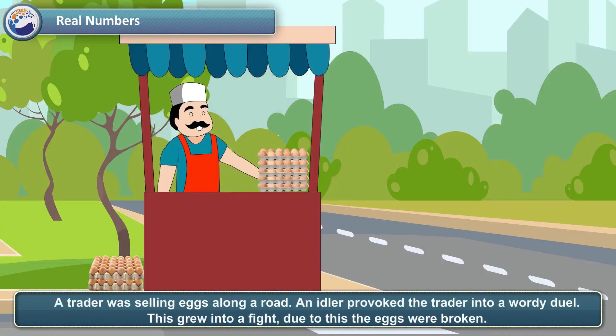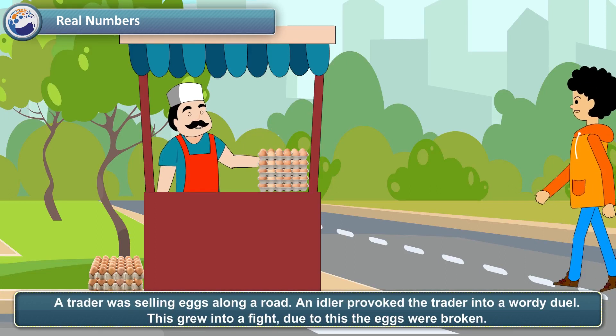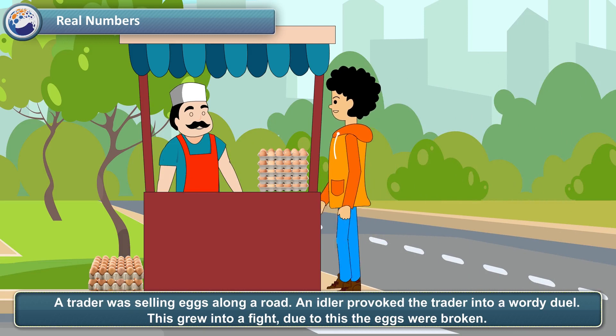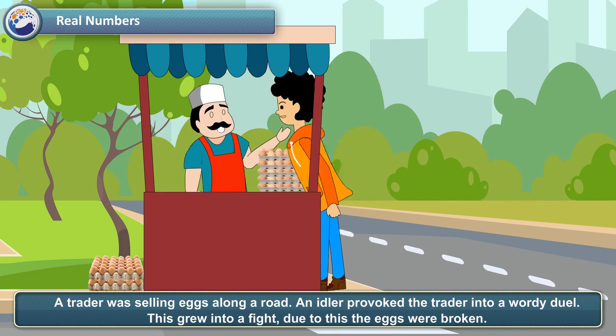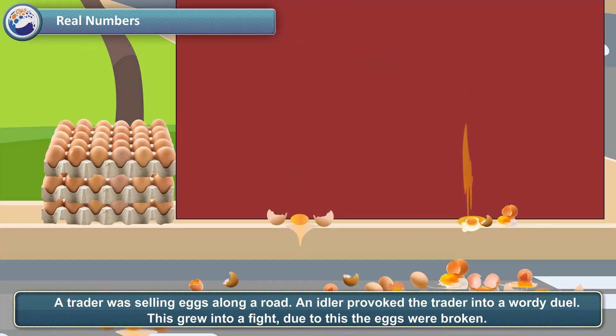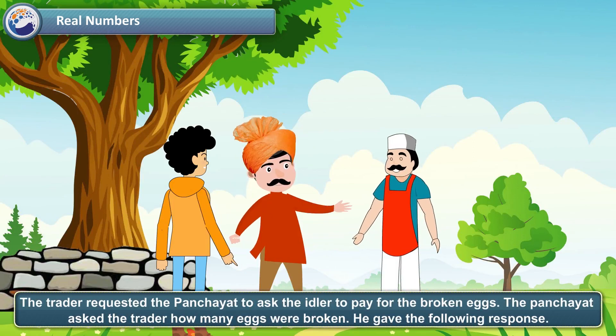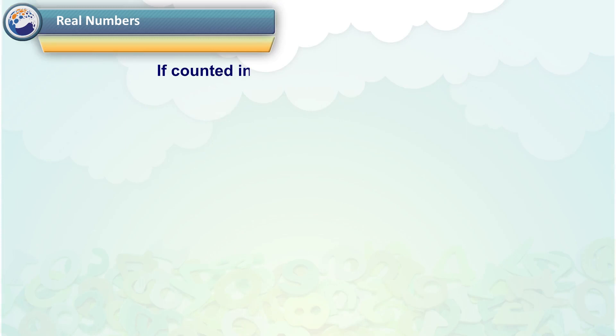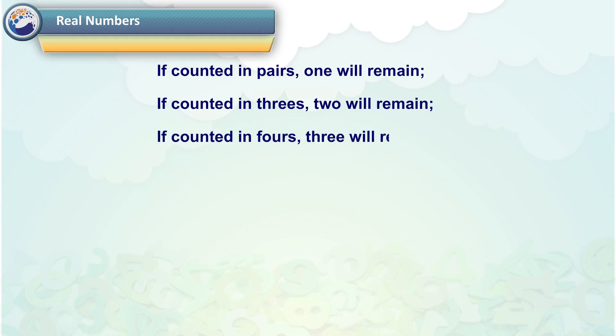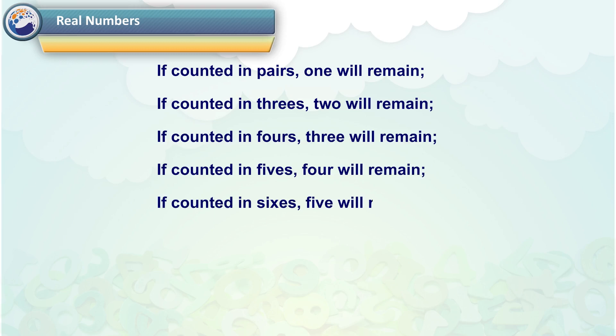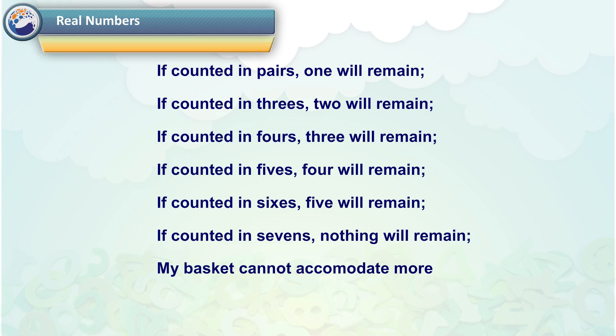A trader was selling eggs along a road. An idler provoked the trader into a wordy duel. This grew into a fight. Due to this, the eggs were broken. The trader requested the panchayat to ask the idler to pay for the broken eggs. The panchayat asked the trader how many eggs were broken. He gave the following response. If counted in pairs, one will remain. If counted in threes, two will remain. If counted in fours, three will remain. If counted in fives, four will remain. If counted in sixes, five will remain. If counted in sevens, nothing will remain. My basket cannot accommodate more than 150 eggs.